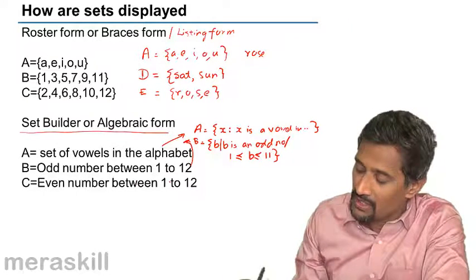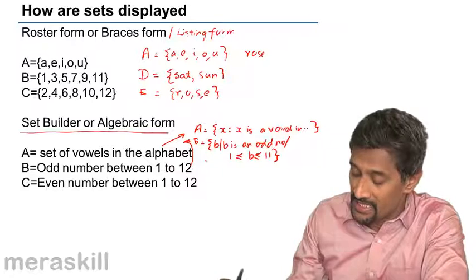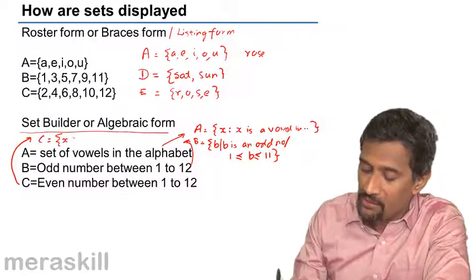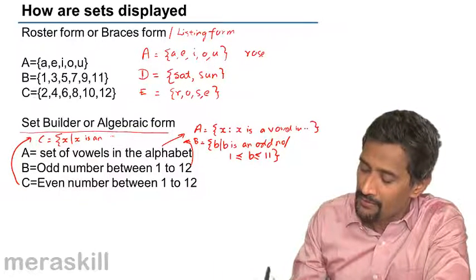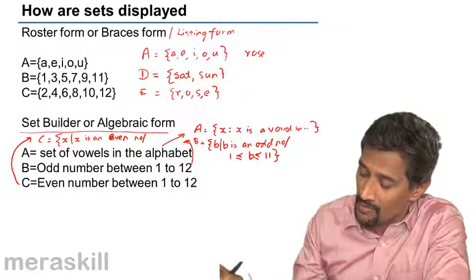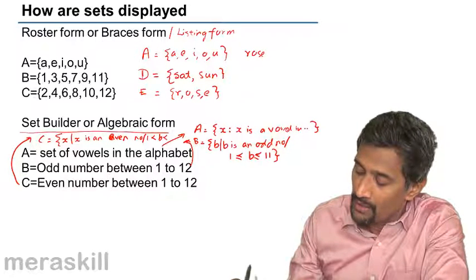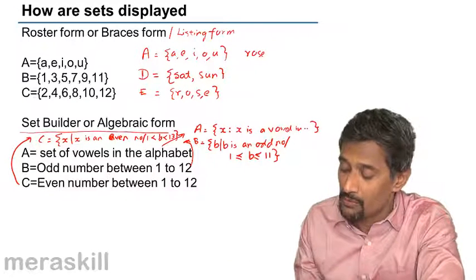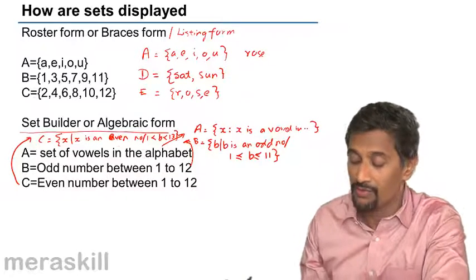In the set-builder form, the elements are not actually listed; you give a description placed inside the braces. Similarly, C is a set of even numbers between 1 and 12. We write it as: C is the set of all X such that X is an even number between 1 and 13, or equivalently, an even number greater than or equal to 2 and less than or equal to 12.